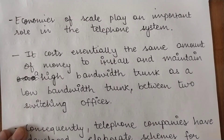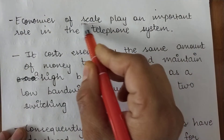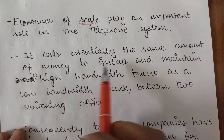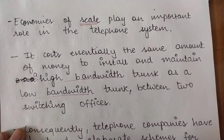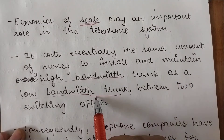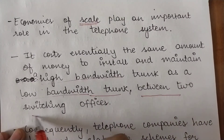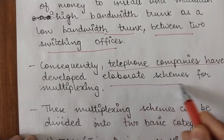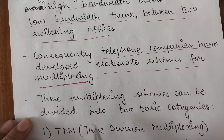The economies of scale play an important role in the telephone system. It costs essentially the same amount of money to install and maintain a high bandwidth trunk as a low bandwidth one. There is not much cost difference even if you install a high bandwidth trunk between any two switching offices. Consequently, telephone companies have developed elaborate schemes for multiplexing so that larger data can be combined and sent over the same channel.